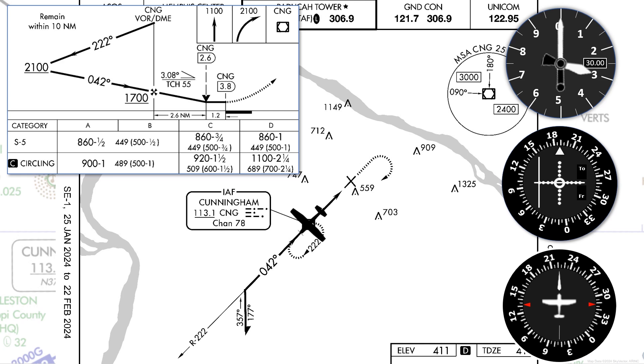Let's say we want to go 5 miles outbound before starting the course reversal. At 100 knots ground speed, that's 3 minutes.